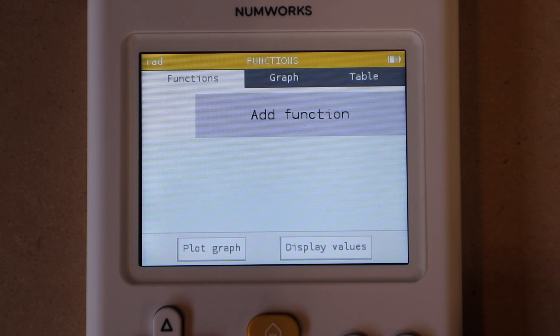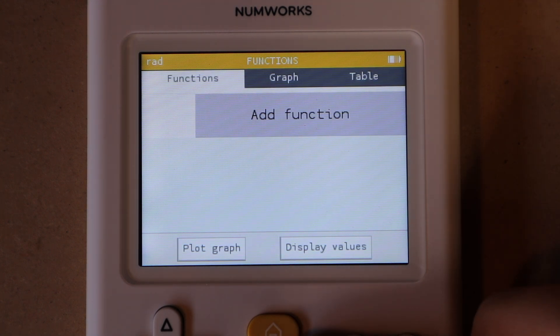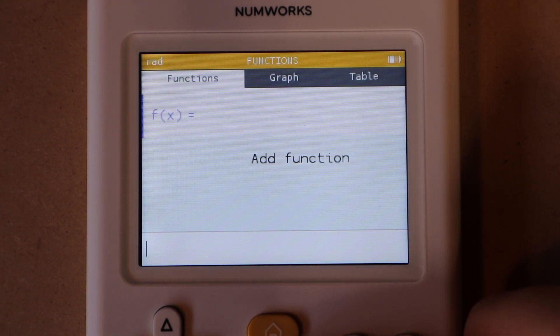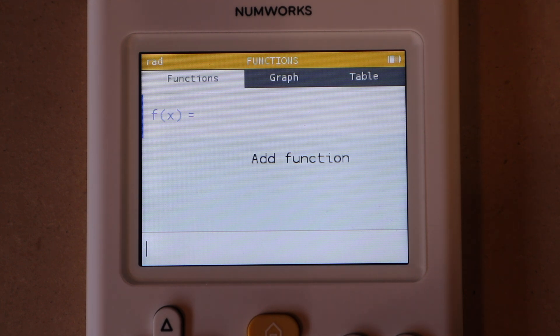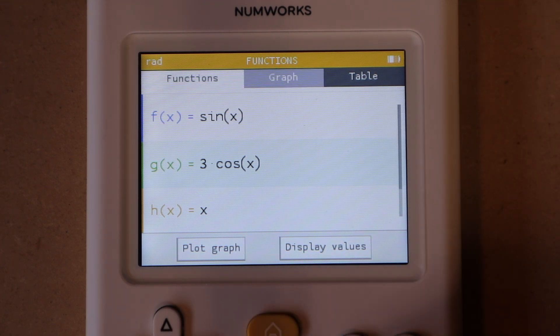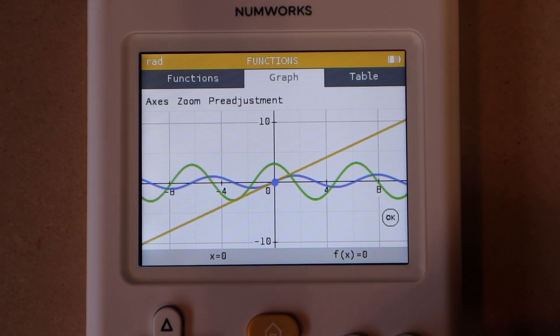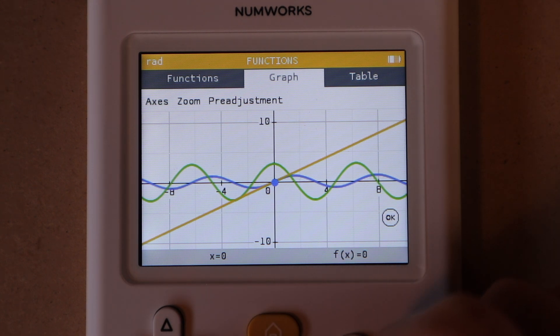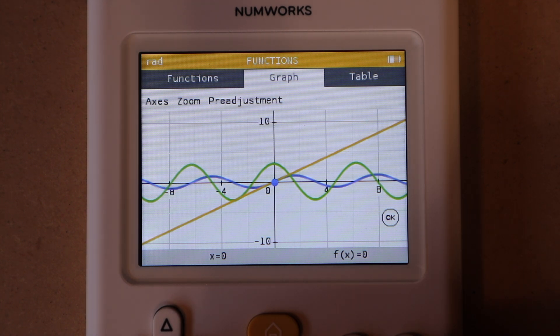Next up is the functions app, and this is for everything to do with graphing lines. This is the screen you get when you first open it up. You press execute to add a new function, and then it will select a color and you can type in whatever function you want. You can add as many functions as you want and it will graph those all on the same graph. So I have these three just for example, and we go over to the graph tab. You can see it draws those out. It's pretty fast compared to a lot of other graphing calculators out there. With this relatively high resolution screen and color, the lines look very nice and well-defined, and it's easy to tell what's going on even when there are multiple functions on the same graph.